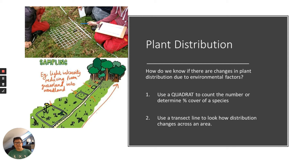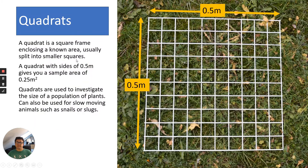There are two methods. One: you can use a quadrat to count the number and determine the percentage cover of a species. Two: you could use a transect line to look at how distribution changes across an area. So firstly, a quadrat — a quadrat is a square frame enclosing a known area.